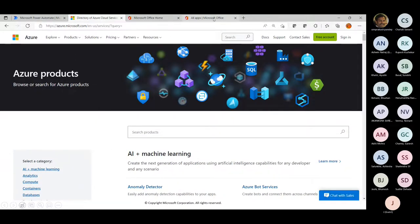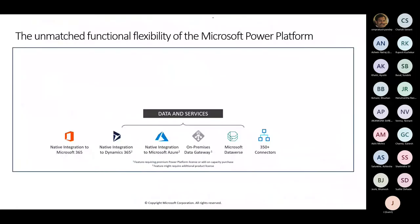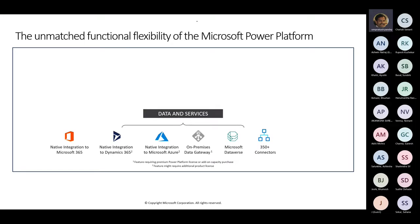When I say native integration, it means direct connectors are available for you to associate your Power Automate with Azure resources — it could be Logic App integration, integration with Azure Storage Account, Azure App Services, and whatever member you want. One would say Microsoft 365 is a Microsoft product and Azure is a Microsoft product — so integration between them, what's the big deal? It doesn't end there. There's also the on-premises data gateway.